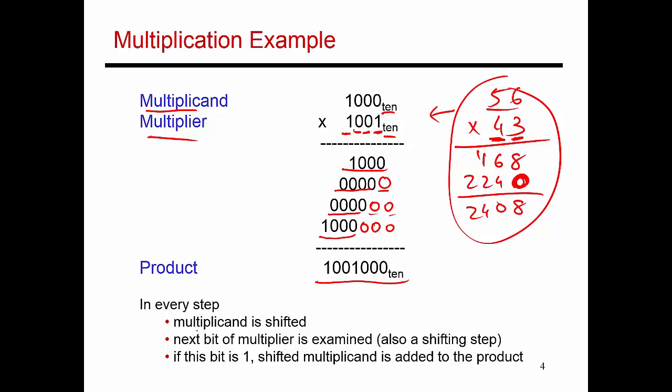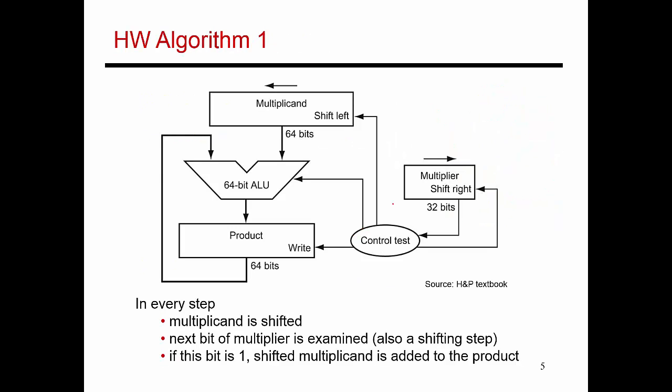Okay, so in every step, the multiplicand, which is this one over here, is shifted to the left. And depending on whether the next bit of the multiplier is a 1 or a 0, either that value gets copied down here, or a set of 0s gets copied down over here. Okay, so that gives us this algorithm that I'm showing you on the next slide.